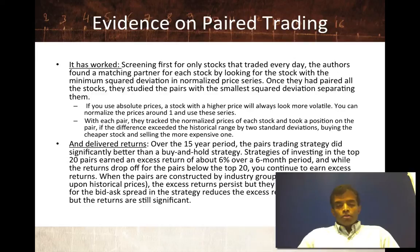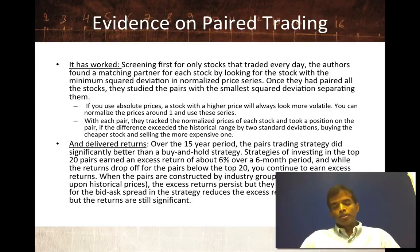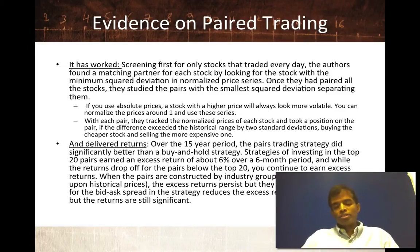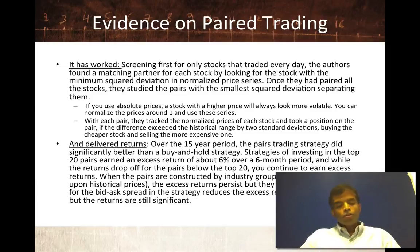The excess returns are about 6% — investing in the top 20 pairs based on historical data earns about 6% over and above your required return. Nothing to sneeze at, but not enough to make you rich. That's a pretty effective return if you can deliver it. When pairs are constructed by industry group, excess returns tend to be smaller. If you let pairs be driven purely by historical data — highest correlation between two stocks — you could end up with an automobile stock paired with a technology stock. The unconstrained strategies take the 20 best pairs; constraining them to the same industry group actually produces lower excess returns. Controlling for transaction costs eats away about a fifth of returns, but even after that, paired trading makes money on paper.